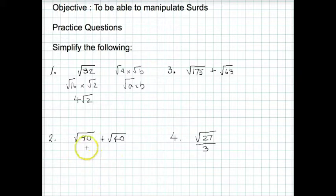Question 2. Same type of question, but what we need to do here is to get these so we've got two roots that are the same. So we need to simplify this one. I can see that if I do root 9 times root 10 I'm going to get 90. So this one would be root 9 times root 10. Well root 9 is 3 so this simplifies to 3 root 10.